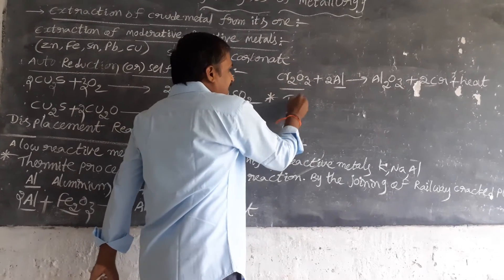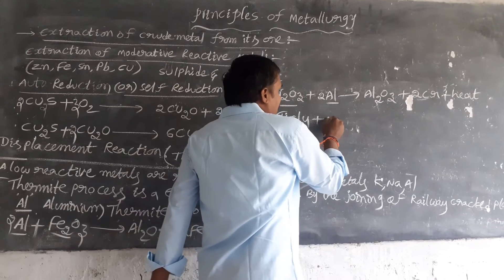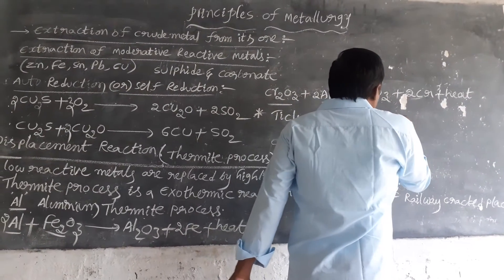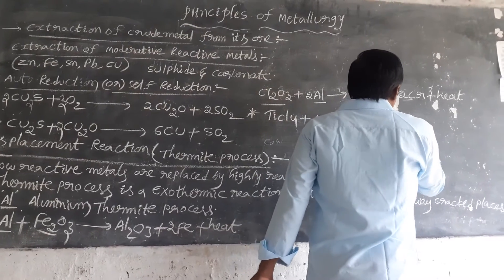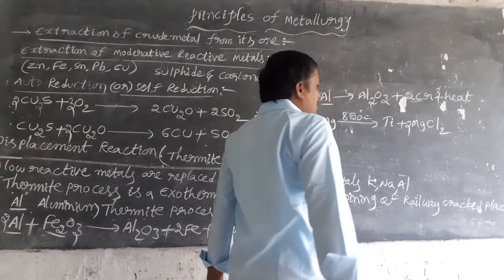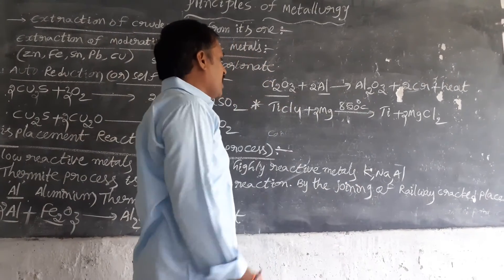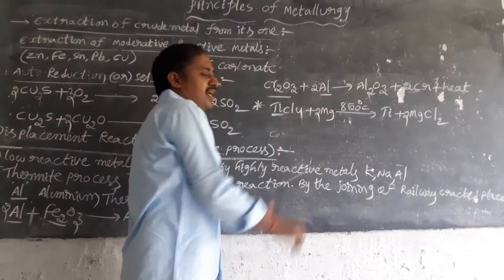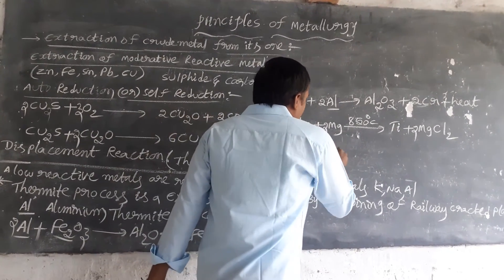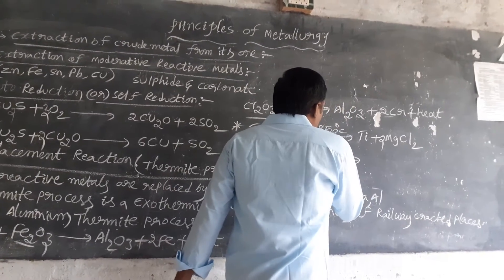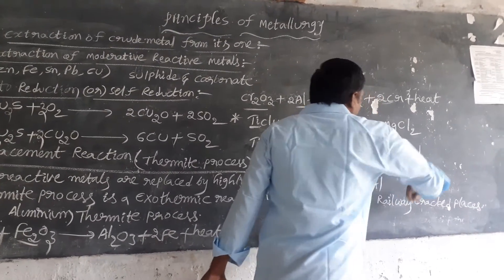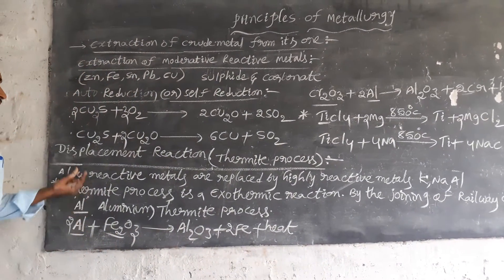Another type of example: titanium tetrachloride reacts with magnesium in the presence of 850 degrees Celsius. Also, titanium tetrachloride plus 4 moles of sodium, in the presence of 850 degrees Celsius, gives titanium plus 4 moles of sodium chloride. In these examples, titanium is replaced by magnesium or sodium.